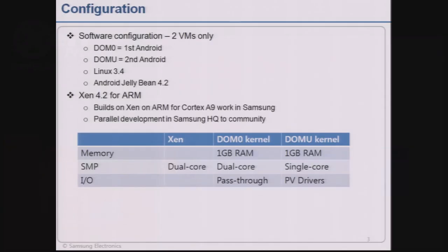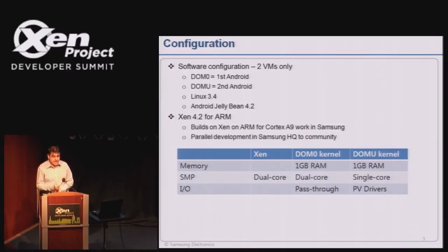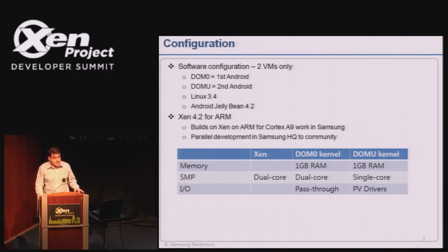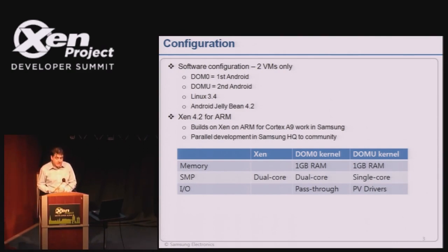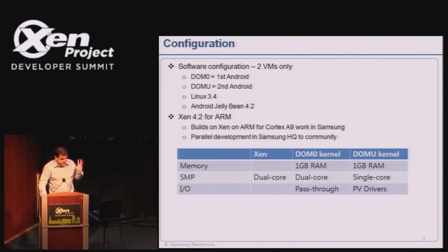We have two VMs running in Xen. DOM0 is amalgamated with the first Android, and then DOMU is our second Android. We're running Linux 3.4 - the standard Android Linux 3.4 - and Android Jelly Bean. The Xen that we're using is a parallel development done in Samsung, based on the Xen on ARM A9 code that we have released previously, modified to work with the ARM A15 chipset.